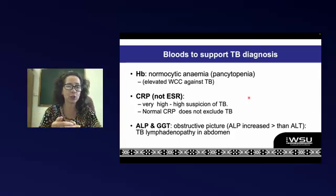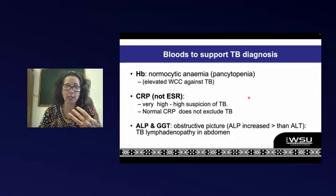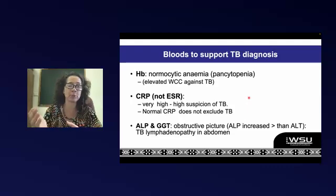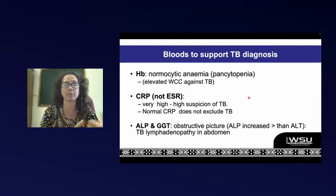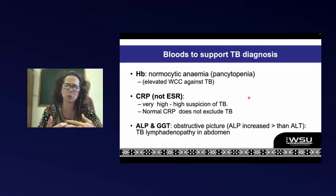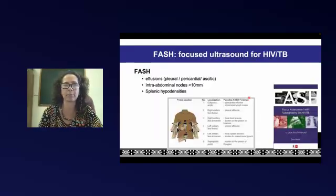When your patient returns, look at how they responded to the antibiotic, then review your blood results. If the HB is normal, CRP is very low, and the patient responded well to antibiotics, you're less worried about TB. If they didn't respond well, HB is low, CRP is up, and ALP and gamma-GT are raised, then you have to make a decision about whether to start empiric TB treatment.